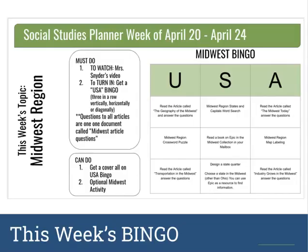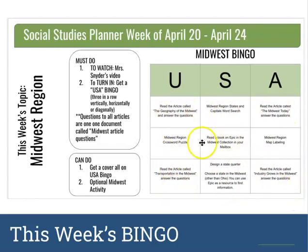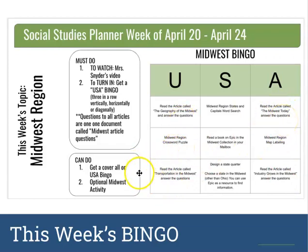Now onto this week's bingo. You're going to watch this video — you're almost done — and then complete your bingo. There are nine different options, and you need to get either three across, three down, or three diagonal. By watching this video you've already done one item. You just need to complete three bingo activities total, and then submit or attach those three items to your work.